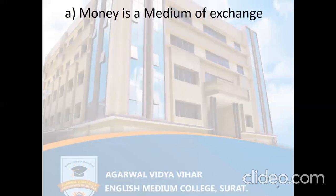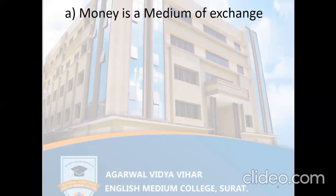Money as a medium of exchange: we have to imagine how business was done before money came into existence — how people were trading or exchanging things with each other. Before money, the system prevailing in every economy was known as the barter system, where goods and services are exchanged for goods and services — that is goods for goods or services for services. That system prevailed for a very long time, but gradually people realized there were certain difficulties or drawbacks, which is why they sought something better and developed money.